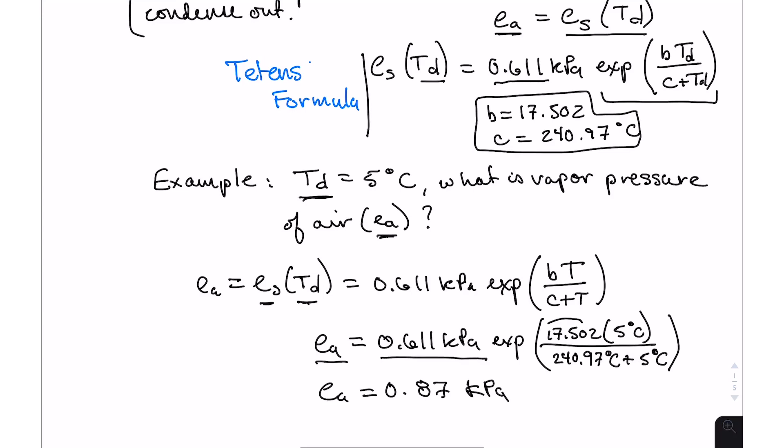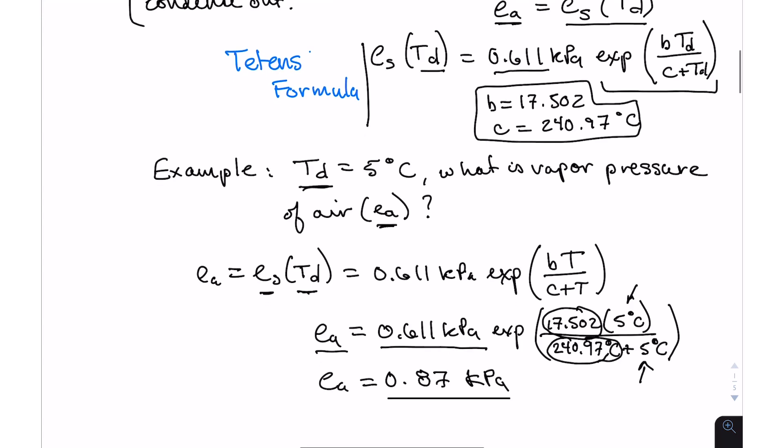EA is calculated by the formula I showed. There's 17.502, that's our first constant b. Our second constant c is 240.97. And then we have the dew point temperature here and here. If we put that into our calculator, our vapor pressure is 0.87 kilopascals. Now there might be a variety of reasons we want this. Maybe we want to calculate the relative humidity from it, and then we'd simply divide that by the saturation vapor pressure at the air temperature. Or more commonly, we use the EA and the saturation vapor pressure at the air temperature to calculate the vapor deficit. That is dew point temperature.